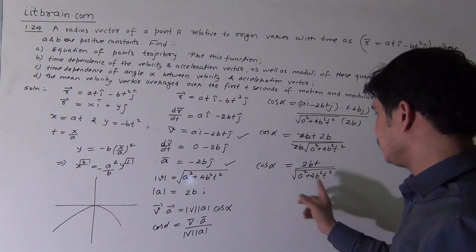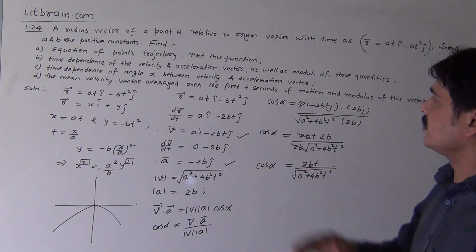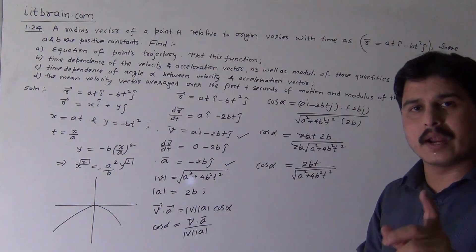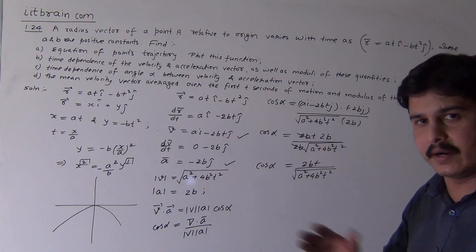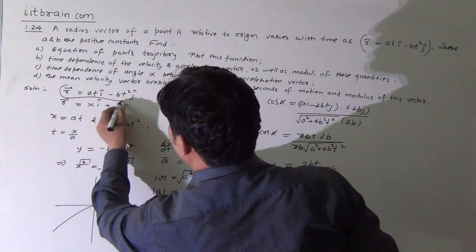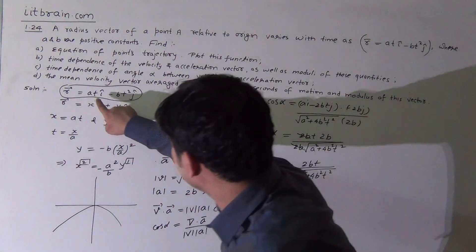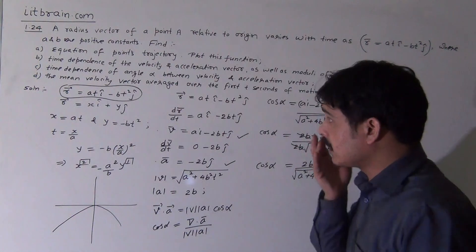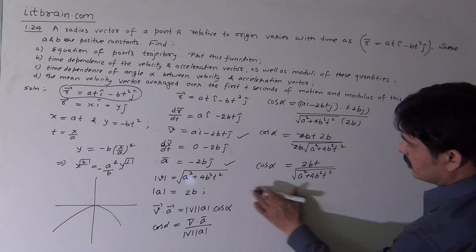The last part is the mean velocity vector averaged over the first t seconds of motion and its modulus. Mean velocity equals total displacement divided by total time taken. Since at t = 0, r = 0·î + 0·ĵ, the particle starts from the origin and covers displacement r = at·î - bt²·ĵ in time t.